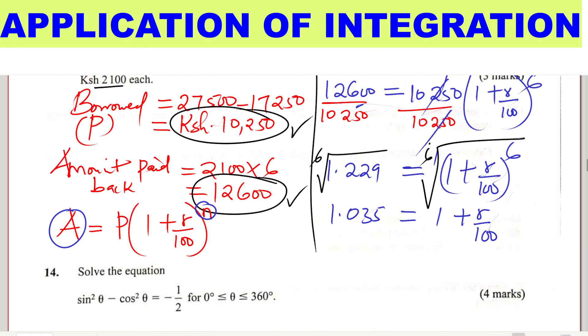We want to find R, so we subtract 1 from both sides. We have 1.035 minus 1 equals R over 100. This gives 0.035 equals R over 100.